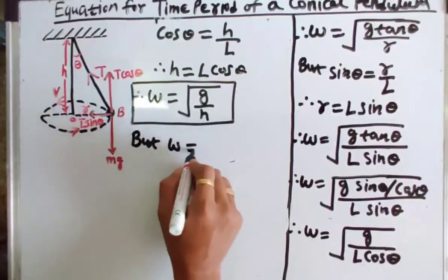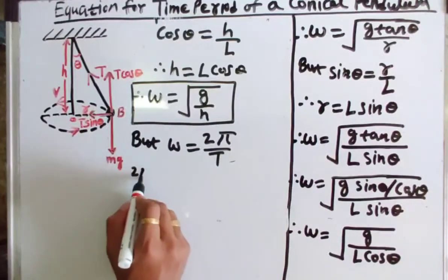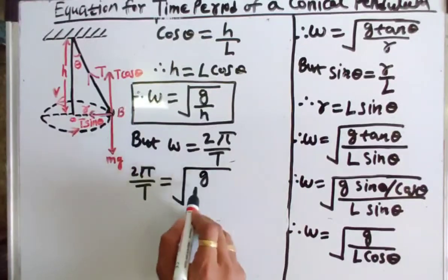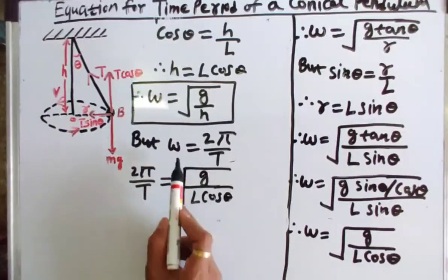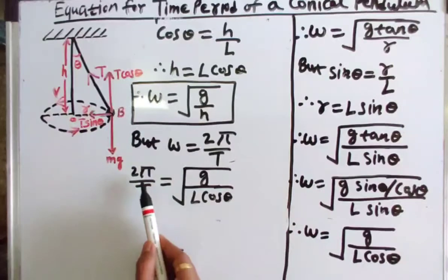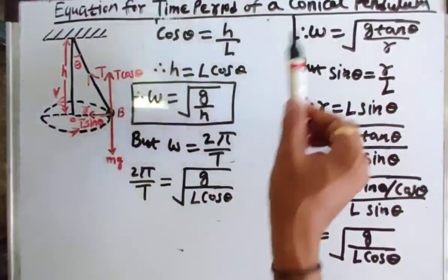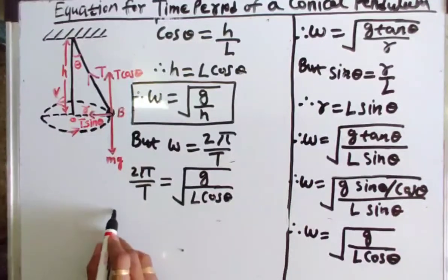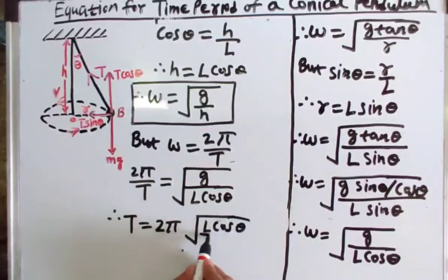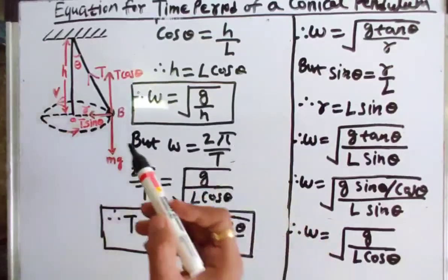Since ω = 2π/T, substituting into the equation gives 2π/T = √(g / L cosθ). Rearranging, we obtain T = 2π√(L cosθ / g). This equation gives us the time period of a conical pendulum — that is, the time taken by the bob to complete one full circular revolution in the horizontal circle.